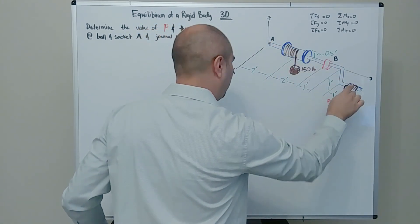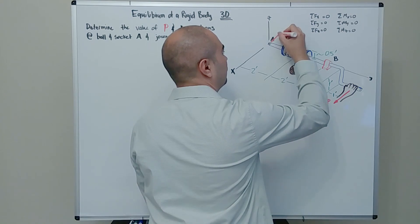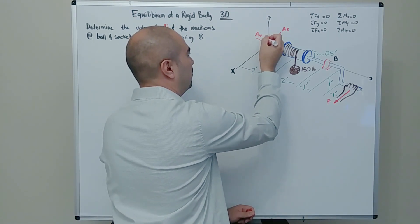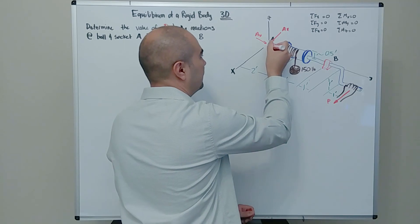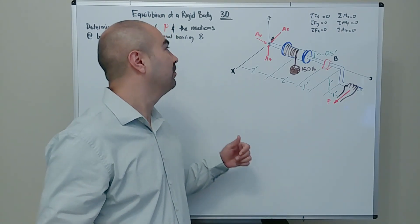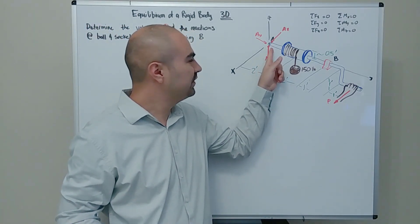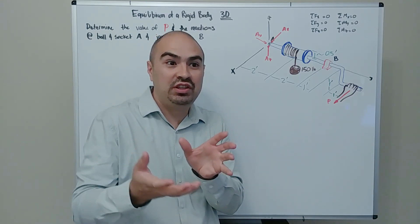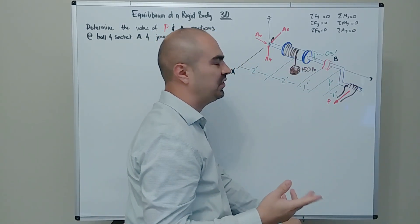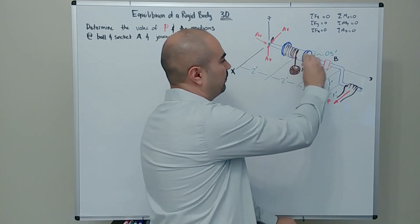Let me erase the ball-and-socket and draw in the reaction forces on the hand crank. There's going to be one in the X direction — assumed positive — one in the Y direction — assumed positive — and one in the Z direction pointing in the positive Z. I got ahead of myself; normally we draw the outline first, then applied forces, then reactions.